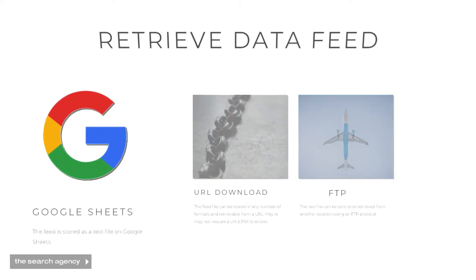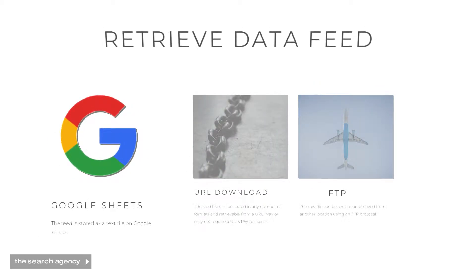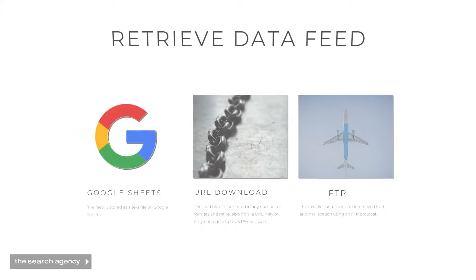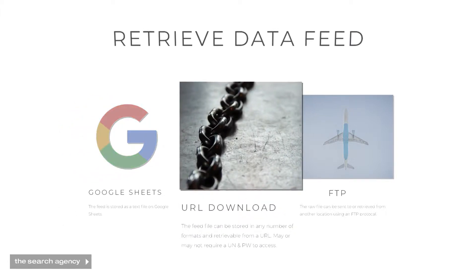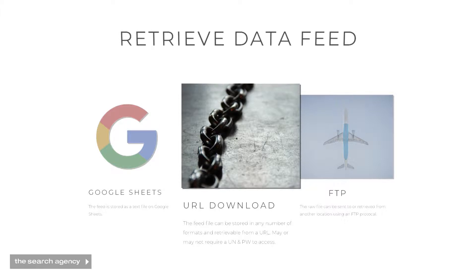Google Sheets, while not the most common or the most flexible, is extremely convenient and does plug directly into Google's Merchant Center. URL download is a bit more common and most e-commerce sites will have some kind of URL from which you can retrieve the data feed products.